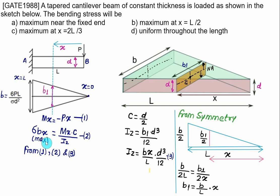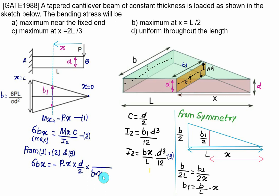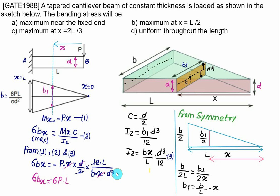The maximum bending stress at any distance x equals Mx·c / Iz = (−Px)·(d/2) / (bx·d³/12L). Simplifying: the factor of 2 and 12 cancel to give 6; the x terms cancel; one d cancels. We are left with sigma_b(x) = −6PL / (b·d²).